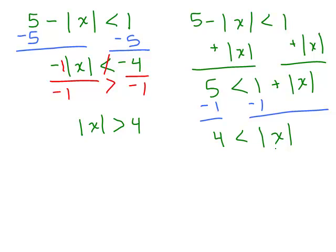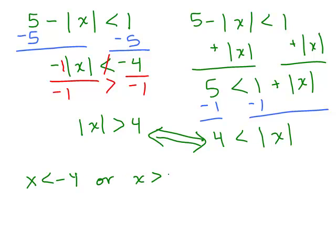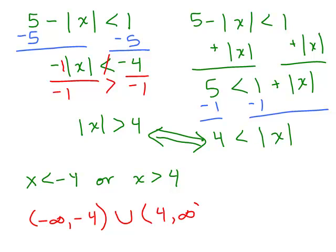You're used to seeing the absolute value of X on the left-hand side, so you realize it's a greater than problem — but these really mean the same thing. If 4 is less than absolute value of X, then absolute value of X is bigger than 4. Either X is less than negative 4, or X is greater than positive 4. So the answer is negative infinity to negative 4, union 4 to infinity, both with parentheses since it's strictly less than.